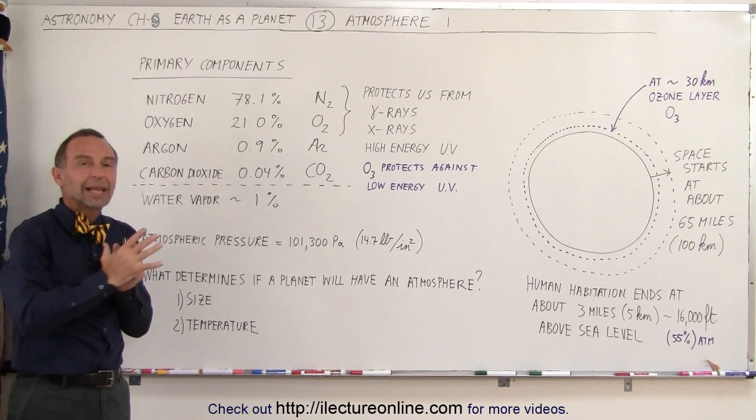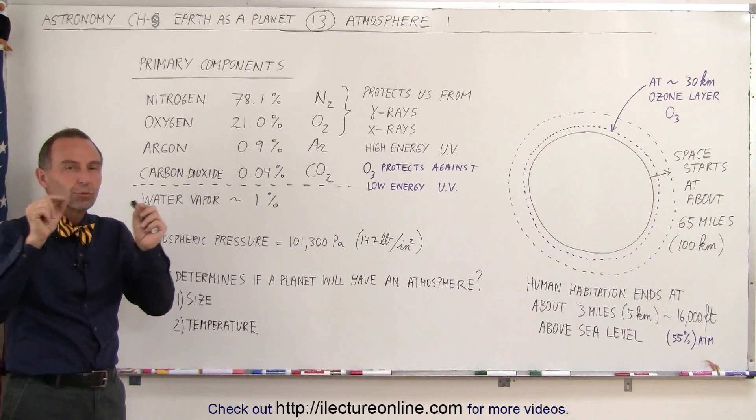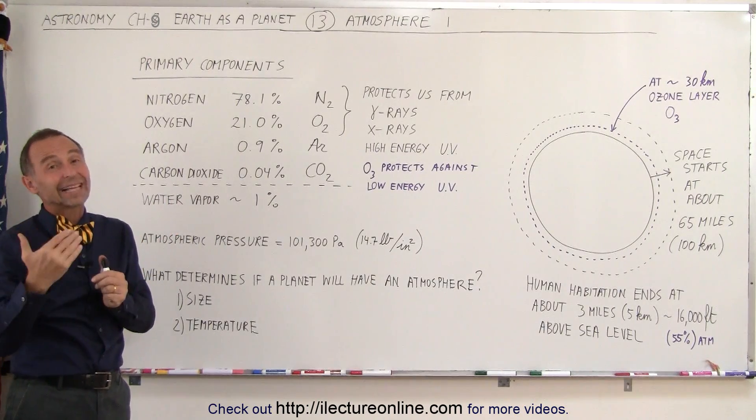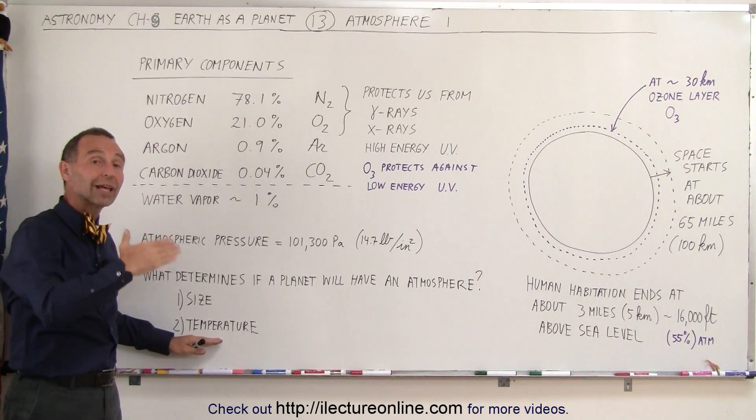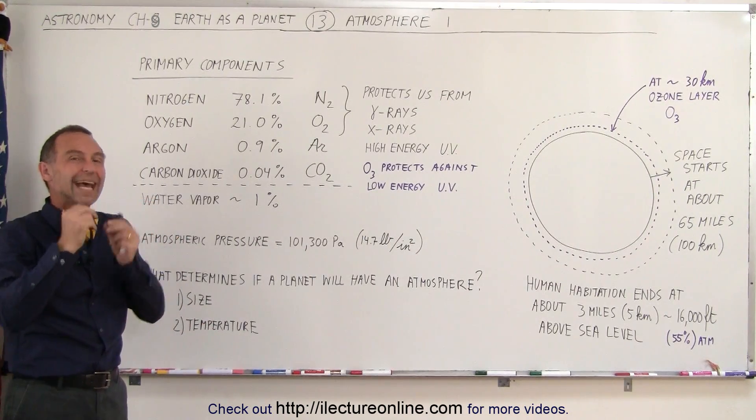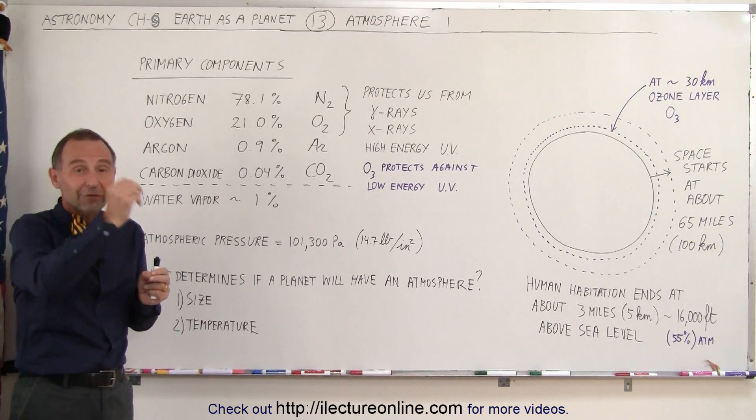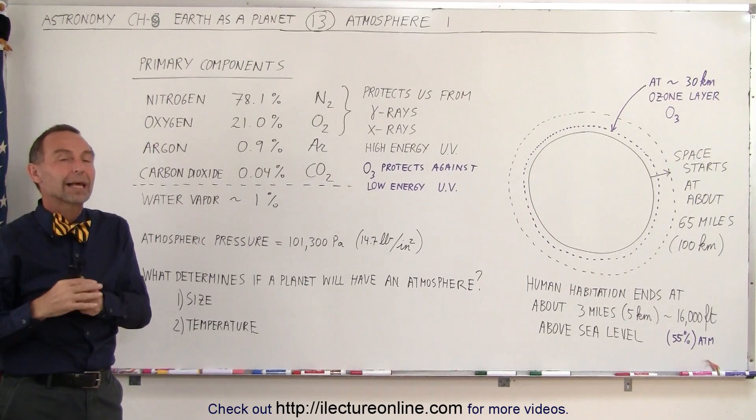Second is temperature. If the planet is far away from the Sun and the temperature is very low, the molecules move much more slowly, they're less likely to reach escape velocity. But if the planet is very close to the Sun, like Mercury, where the temperatures are very high, any gas molecules near the surface will move at very high speeds and are much more likely to escape the gravitational pull of the planet.